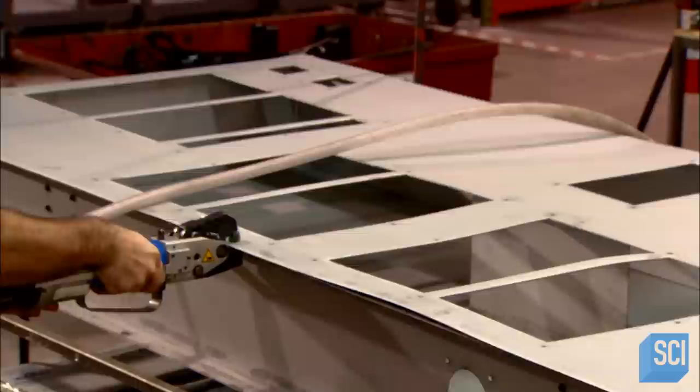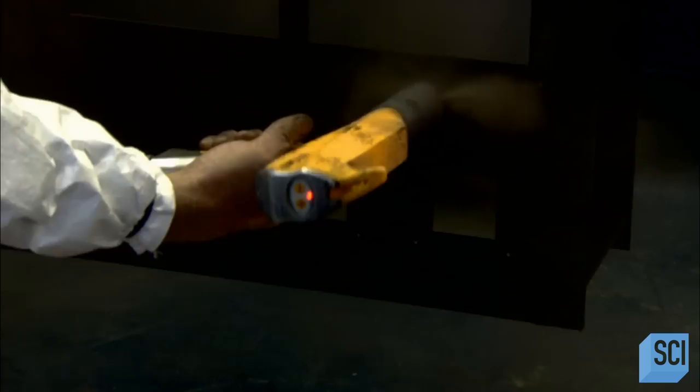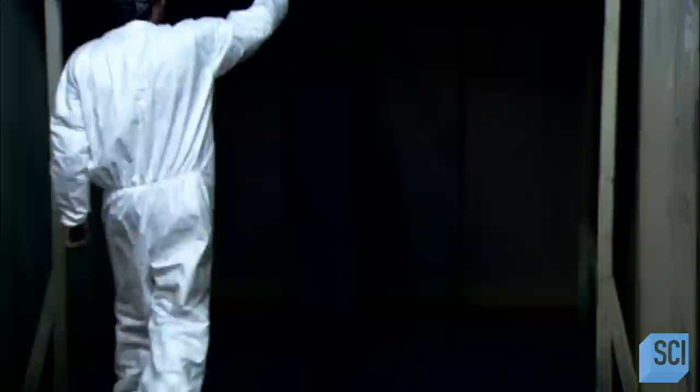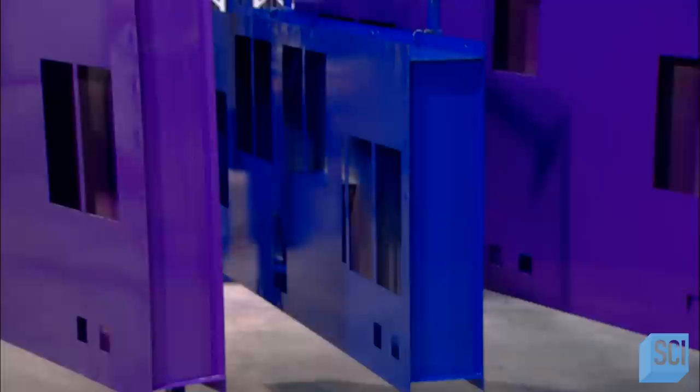The next worker sprays a powder paint coating onto the entire scoreboard. Then it's into a giant convection oven for about 14 minutes to cure the powder paint. The result is a tough powder paint skin that will make it possible for the scoreboard metal to weather the elements.